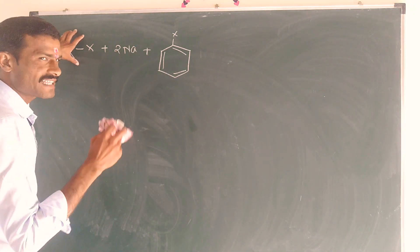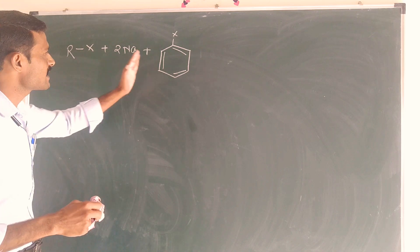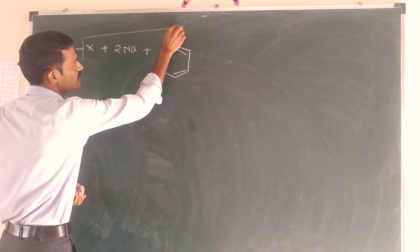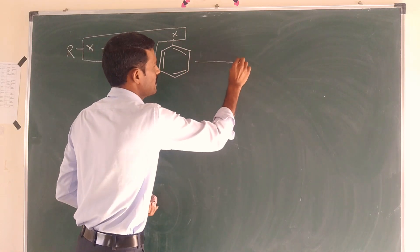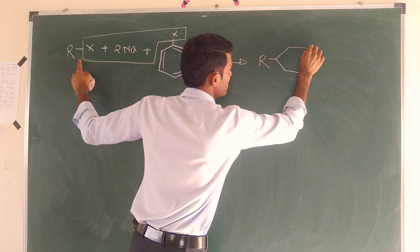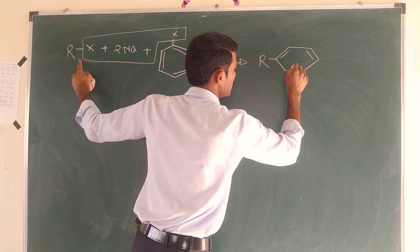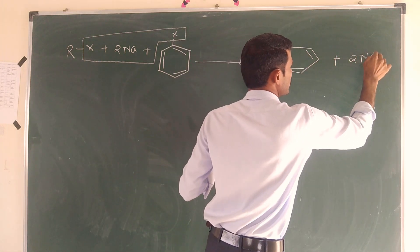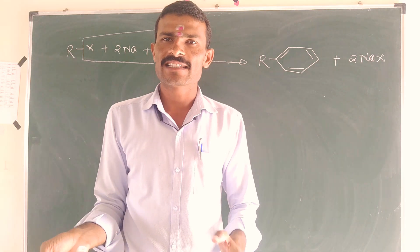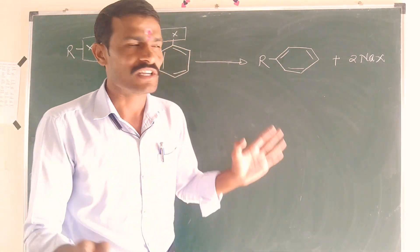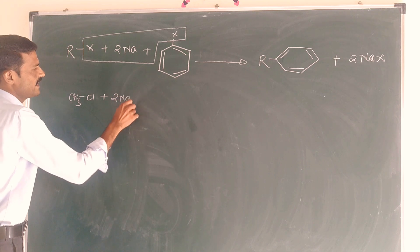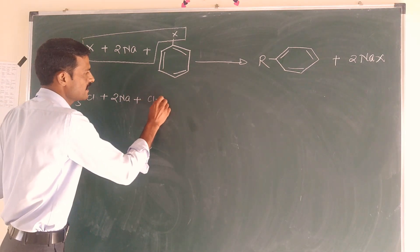What is the Wurtz reaction? In the Wurtz reaction, ArX reacts with sodium. The general form is: ArX plus 2 Na gives R-R plus 2 NaX. For example, CH3Cl plus 2 Na plus gives products. This is how the Wurtz reaction proceeds.